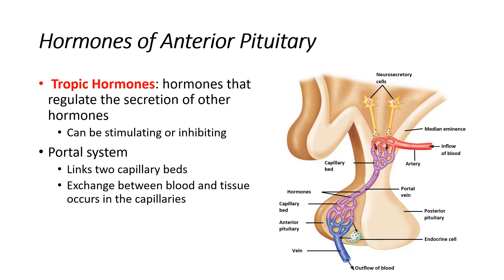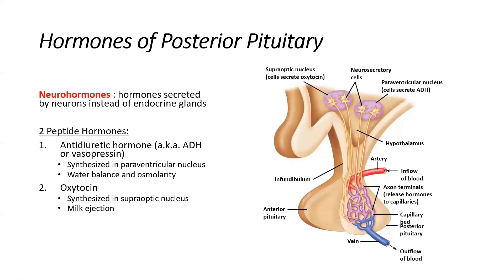The posterior pituitary is neurological in its origin — it's not epithelial the way the anterior pituitary is. All other glands are made of epithelial tissue, but the posterior pituitary is made of neural tissue. It differs completely in tissue makeup from the anterior pituitary, which is why hormones are not made there — they're just projected from the axons and released there.